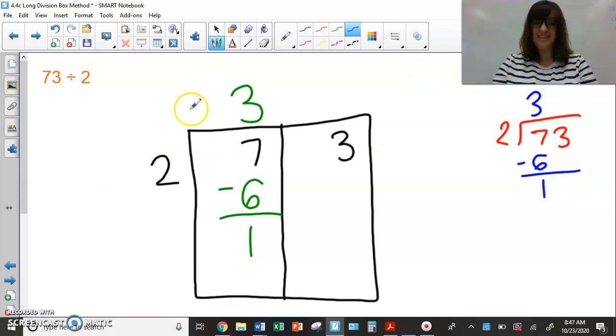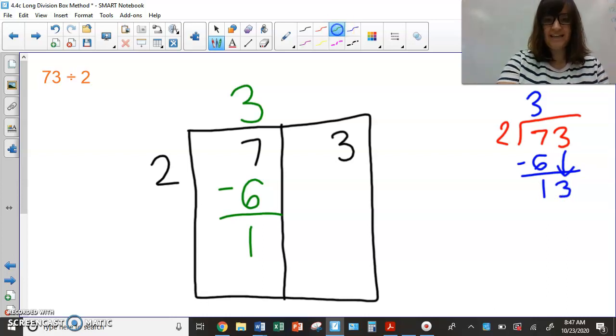So I'm going to write my six underneath, and then I'm going to subtract seven minus six equals one. Over here, I'm going to show you, if you were doing the traditional method, you would have done the same thing. You would have said two goes into seven three times. Three times two is six. And you subtract, and you get one. So, so far, this is the same as this. It's just organized a little bit differently.